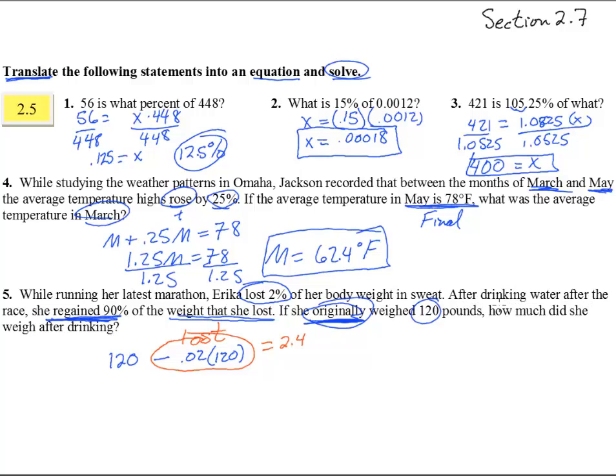After drinking the water, she regained 90%. So let's do it in another color. What did she regain? 90% of. So she regained 90% of 2.4, right? She regained of the weight she had lost.